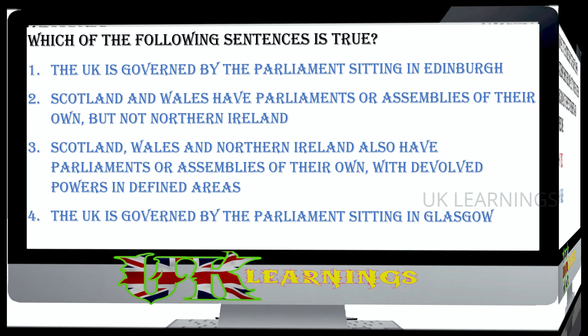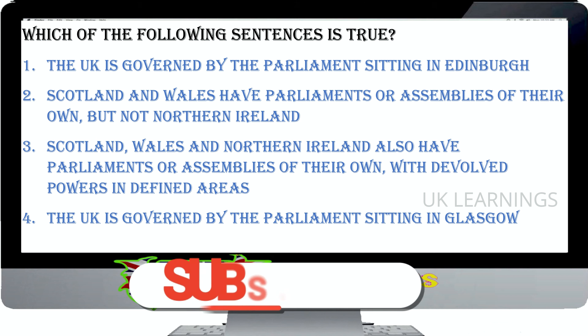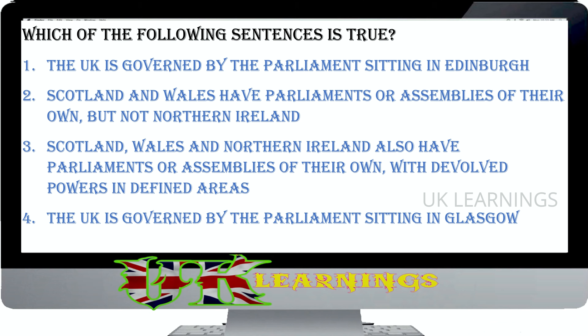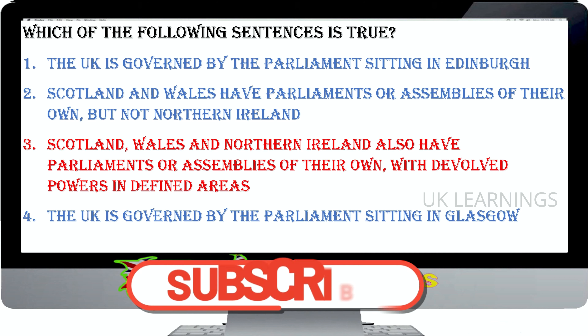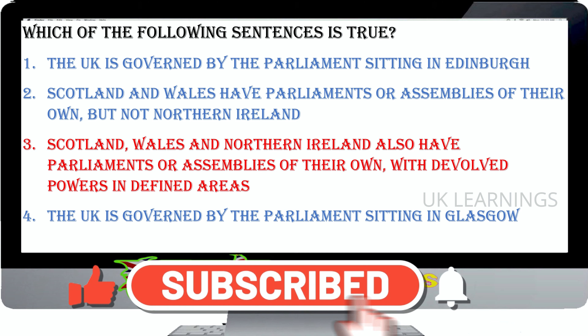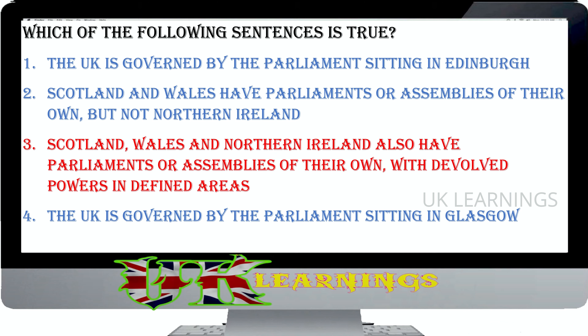Which of the following sentences is true? The UK is governed by the Parliament sitting in Edinburgh; Scotland and Wales have Parliaments or Assemblies of their own but not Northern Ireland; Scotland, Wales and Northern Ireland also have Parliaments or Assemblies of their own with devolved powers in defined areas; the UK is governed by the Parliament sitting in Glasgow. The correct answer is: Scotland, Wales and Northern Ireland also have Parliaments or Assemblies of their own with devolved powers in defined areas.